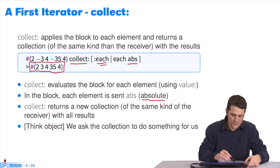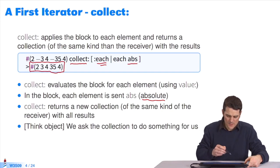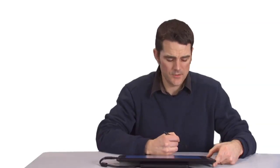The block has been applied to every element of the collection. The absolute value of 2, the absolute value of negative 3 which is 3, the absolute value of 4, the absolute value of negative 35 which is 35, and the absolute value of 4, 4. The interesting thing which you must remember is that you must think object. We ask the collection to do something for us. The collection browses its own elements by itself. We provide the processing of each element. That's where the secret of iterators lies.